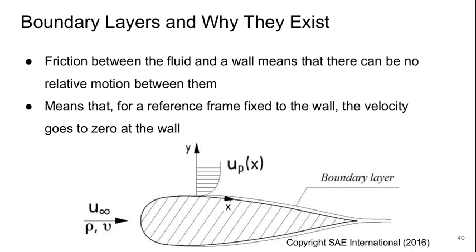First of all, let's start with boundary layers and why they exist. We're always going to have friction between the fluid and walls, and that means there can be no relative motion between them.